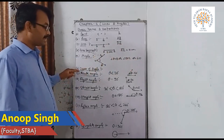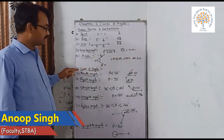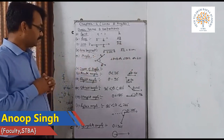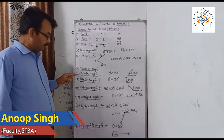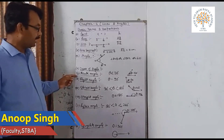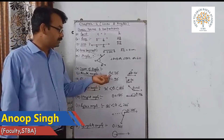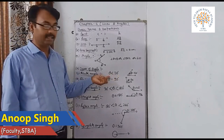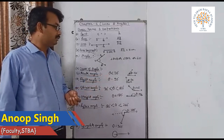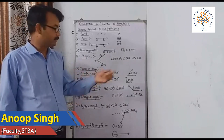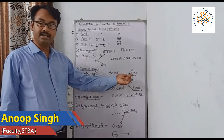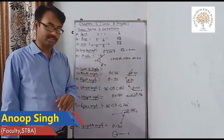Now the types of angles. First, acute angle: an angle which is less than 90 degrees and greater than 0 degrees is called an acute angle. For example, theta equals 60 degrees is an acute angle.